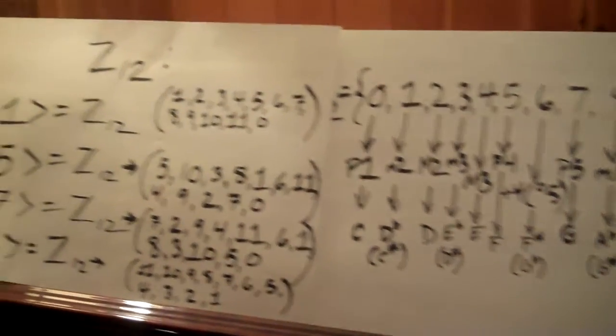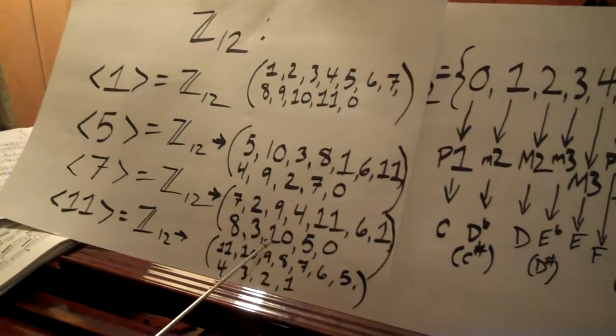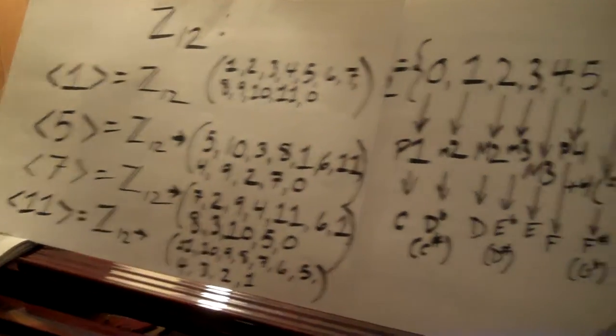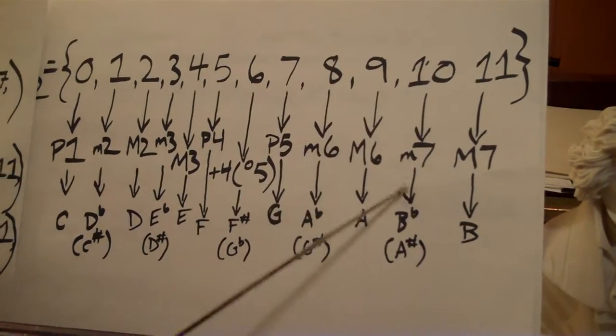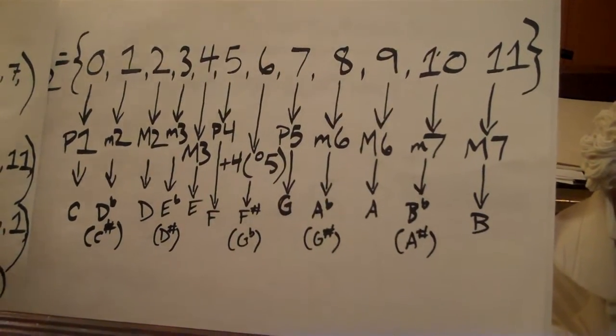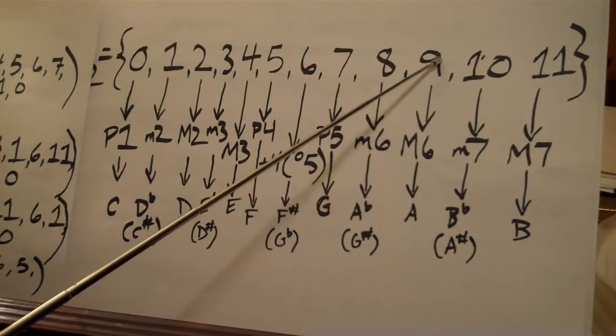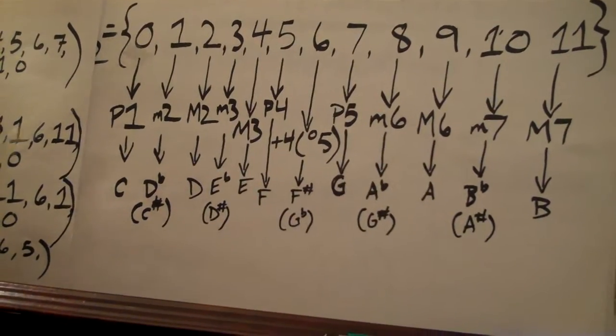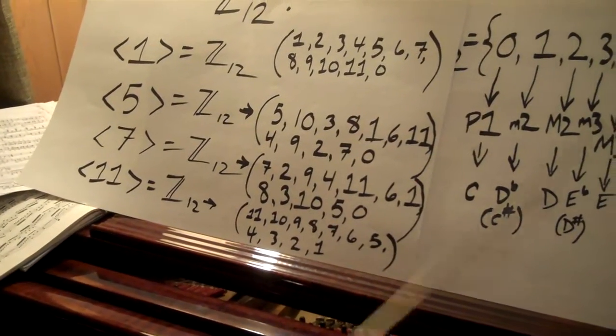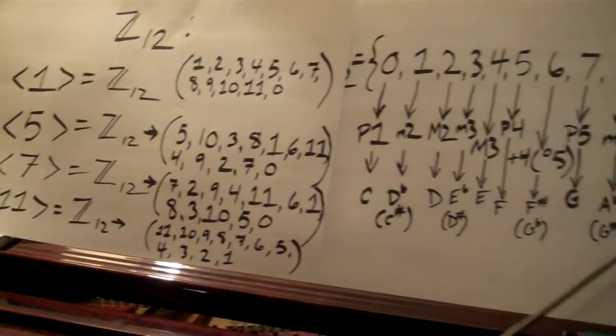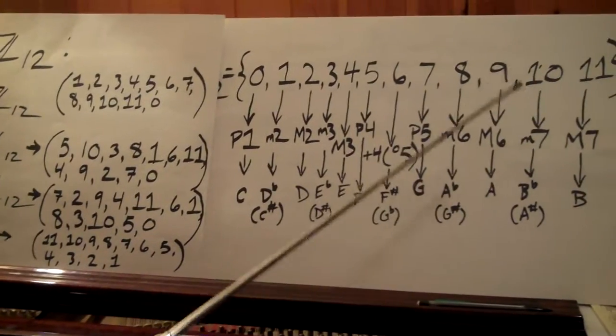Now, the inverse element of 1 is 11, which is also a generator element. If we look at the table here, 11, the minor 7th, plus 11 is 10, which is Bb, plus 11 mod 12 is A. So, the 11 generates the whole group in a sequence of ascending major 7th, which is the same as descending minor seconds.